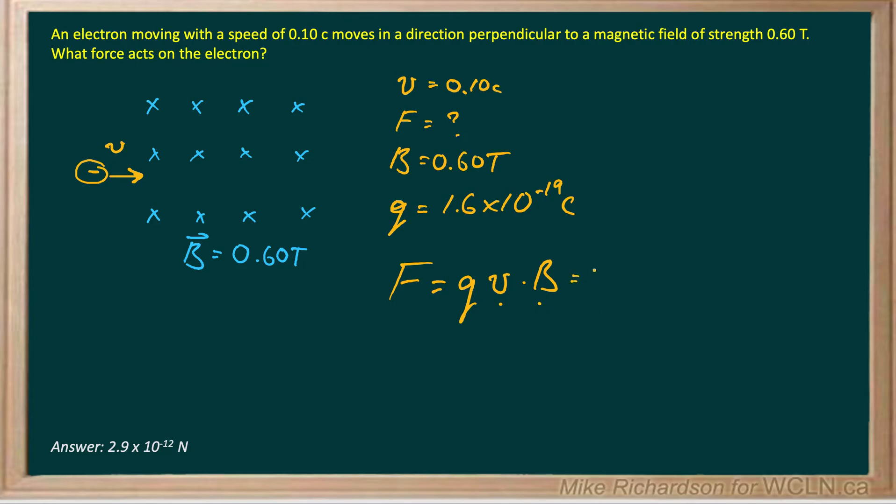So we go 1.6 times 10 to the negative 19 coulombs, that's the charge of an electron, times my velocity. Now let's figure out my velocity. The speed of light is 3 times 10 to the 8th meters per second. So if I have basically 10% of that, my velocity is 3 times 10 to the 7.